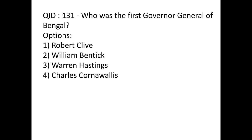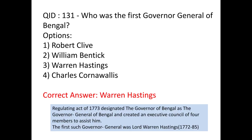The first Governor General of Bengal is Warren Hastings. Remember that under the Regulating Act of 1773, the Governor of Bengal was redesignated as Governor General of Bengal with an Executive Council of four members to assist him. The first Governor General of Bengal was Warren Hastings and his tenure was from 1772 to 1785. Also remember: the first Viceroy of India was Lord Canning.